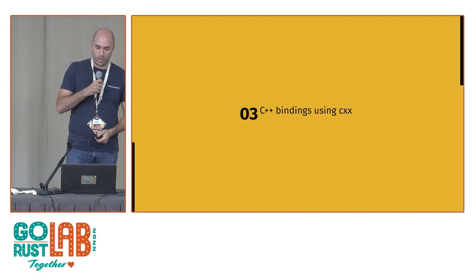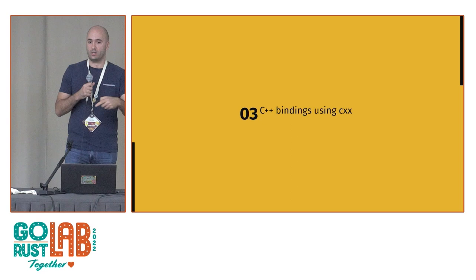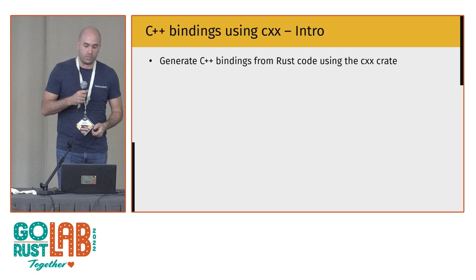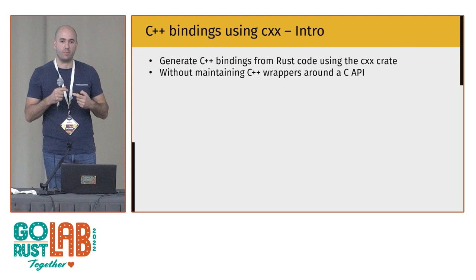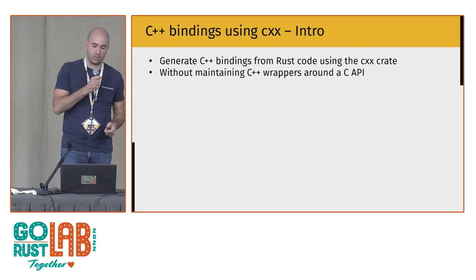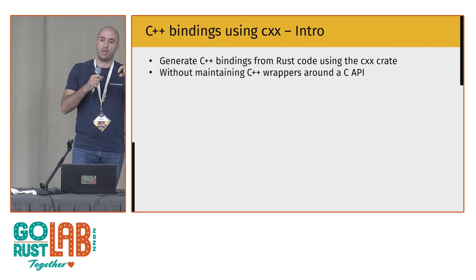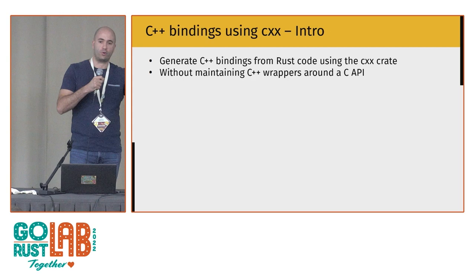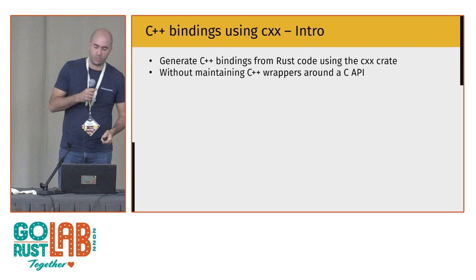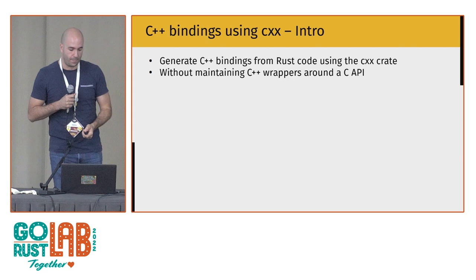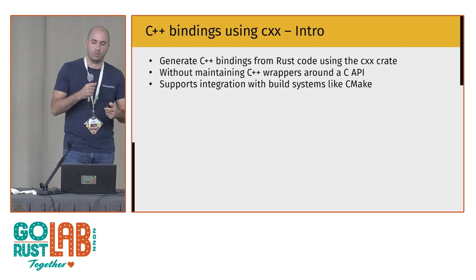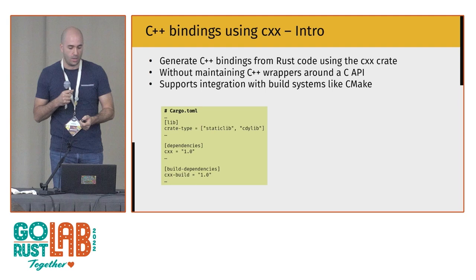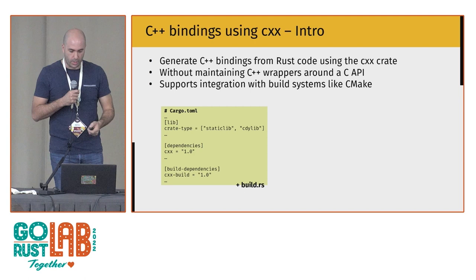Now we'll move on to C++. We'll create C++ bindings using the `cxx` crate. What's special about the `cxx` crate is that we don't have to manually maintain the Rust FFI and the C side — you don't have to manually create Rust FFI, then create a C API, then wrap that in an idiomatic C++ API. CXX lets us cross that boundary automatically. It implements Rust types in C++ and vice versa, supports integration with build systems like CMake, and also supports raw compiler builds.